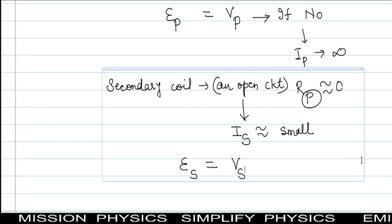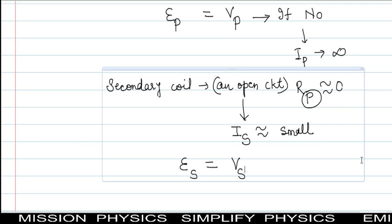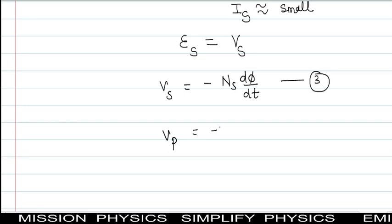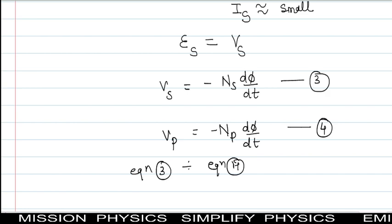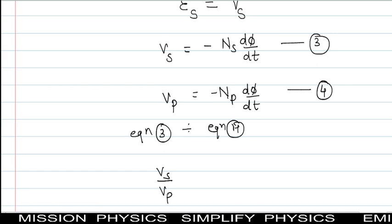We get: V_S = -N_S × (d phi / dt), equation 3; and V_P = -N_P × (d phi / dt), equation 4. Dividing equation 3 by equation 4, d phi / dt cancels, and we get V_S / V_P = N_S / N_P. That is, the voltage in the secondary upon the voltage in the primary equals the turns ratio of secondary to primary.